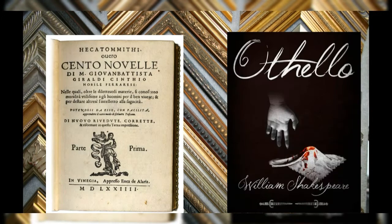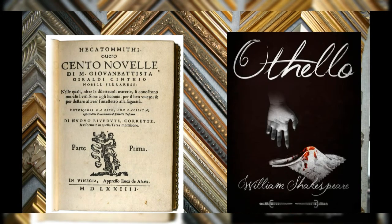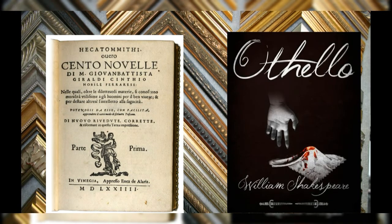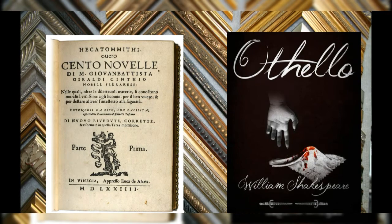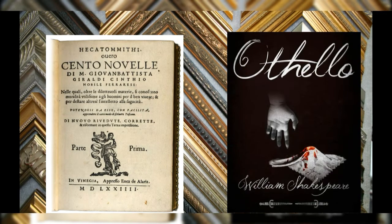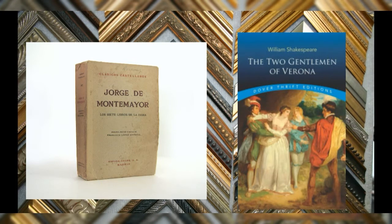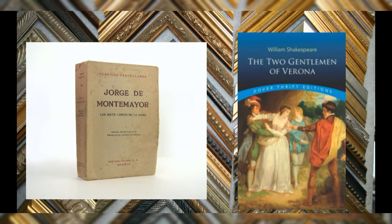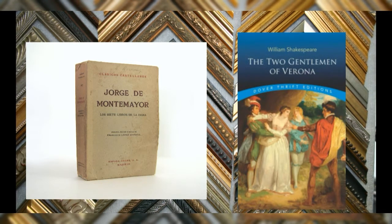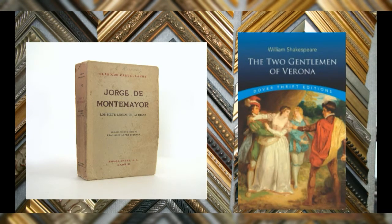Cinthio's Hecatommithi is the main source for Shakespeare's Othello. The source of Shakespeare's The Two Gentlemen of Verona is taken from Jorge de Montemayor's pastoral romance Diana Enamorada.